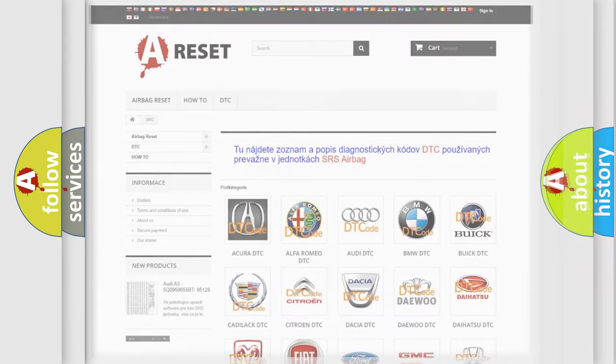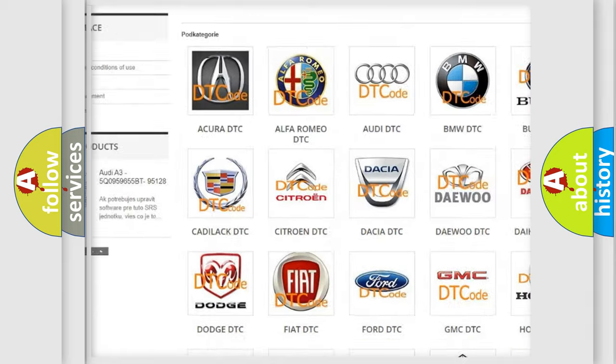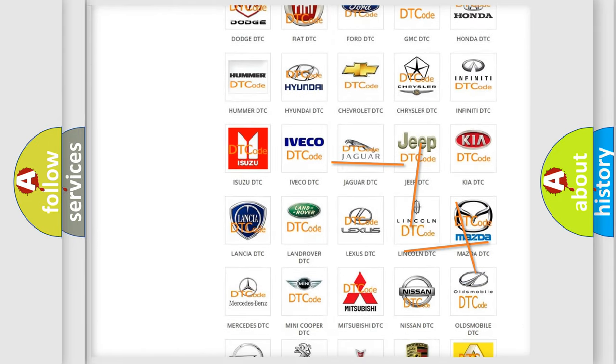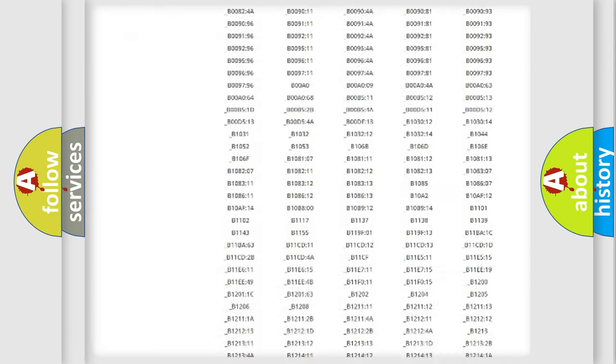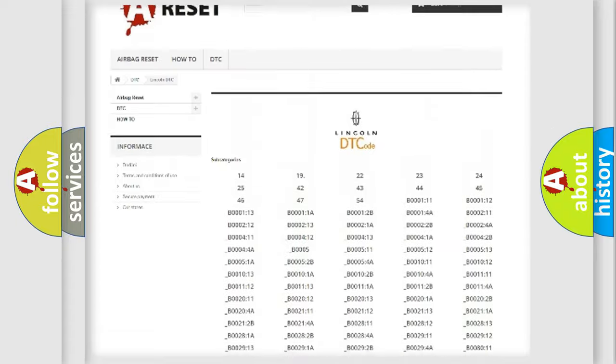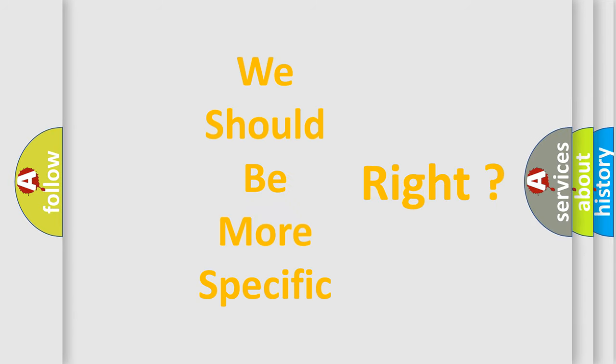Our website airbagreset.sk produces useful videos for you. You do not have to go through the OBD2 protocol anymore to know how to troubleshoot any car breakdown. You will find all the diagnostic codes that can be diagnosed in vehicles. Also many other useful things. The following demonstration will help you look into the world of software for car control units.